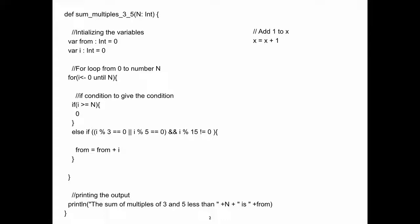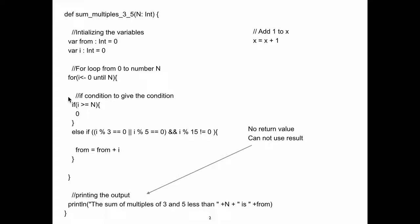When we look at the comments, it's like: 'initialize variables' - yes, that's what's happening. 'For loop from zero to n' - yes, there's a for loop that goes from zero to n. The comments are just repeating the code. My favorite example is a line: x equals x plus one, and then you say 'I'm adding one to x' - you're just repeating the code in comments. Those comments don't add anything to understanding the program. They just make it a little harder to read - the reader has to go around the comments to find the code.